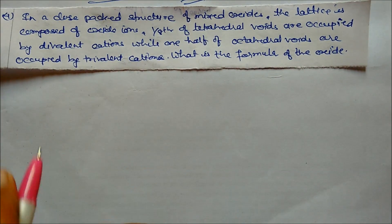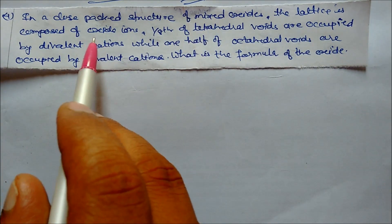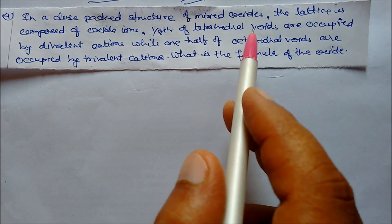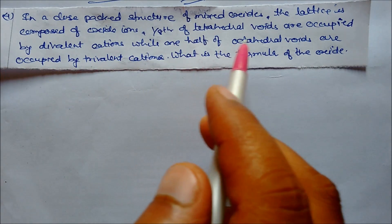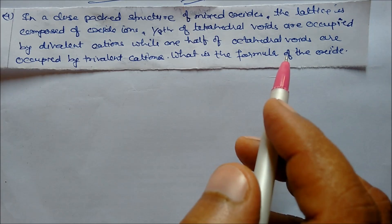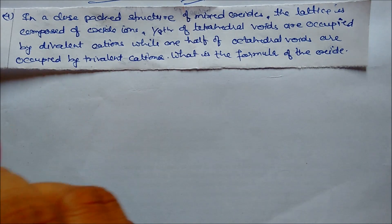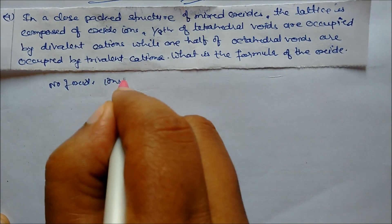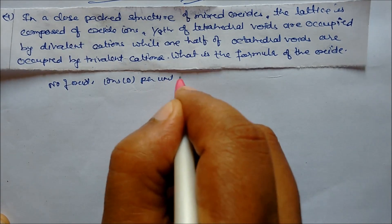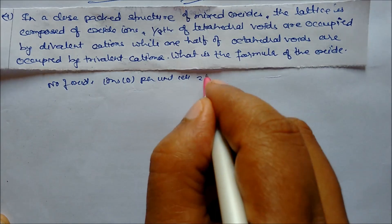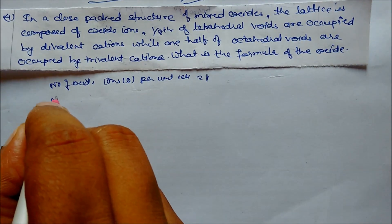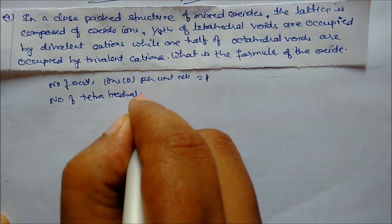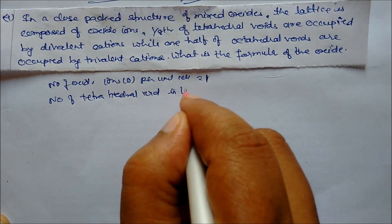Next: In a close-packed structure of a mixed oxide, the lattice is composed of oxide ions. One-eighth of the tetrahedral voids are occupied by divalent cations and one-half of the octahedral voids are occupied by trivalent cations. What is the formula of the oxide? The number of oxide ions (O) per unit cell is 1.